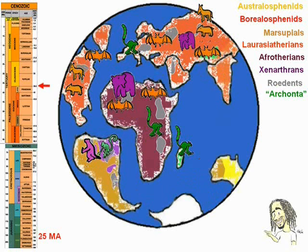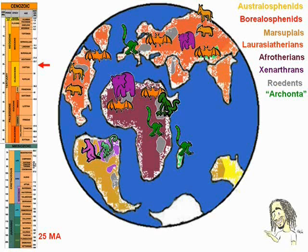25 million years ago, Africa becomes an island again. The first Old World monkeys appear in Africa — a lineage that will originate the baboons, the proboscis monkey, the Gibraltar monkeys, the macaques, and the tailless apes. The marsupials diversify in Australia, beginning to form the current families, such as those of kangaroos and koalas, wombats, and Tasmanian devils.